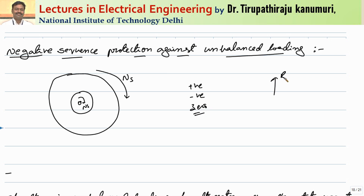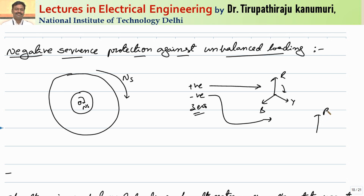The positive sequence component — R, Y, and B — rotates in the forward direction, producing a rotating magnetic field. The negative sequence component rotates in the opposite direction. The zero sequence components are in phase with each other and will only flow if the fault is associated with ground. If not grounded, only positive and negative sequence components are present.